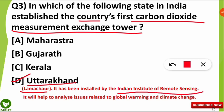The carbon dioxide measurement exchange tower in Uttarakhand's Lalmachaur was installed by the Indian Institute of Remote Sensing, that is IIRS. It will help to analyze issues related to global warming and climate change. This is a very important and useful tower that you should know about.